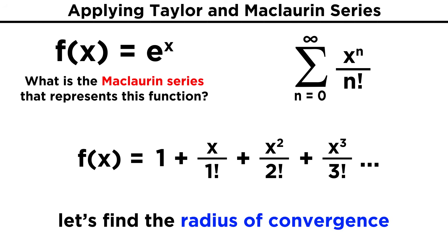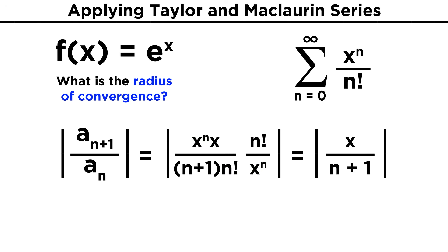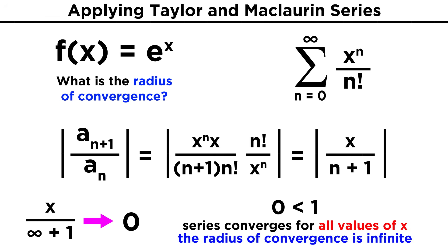Let's make sure we can find the radius of convergence for this function. That will require the ratio test. We set that up and flip the denominator to get x to the n plus one over n plus one factorial, times n factorial over x to the n. After some simplification, we can cancel some terms, and we get the absolute value of x over n plus one, and as n approaches infinity, this goes to zero. Zero is less than one, so the series converges for all values of x, and the radius of convergence is infinite.